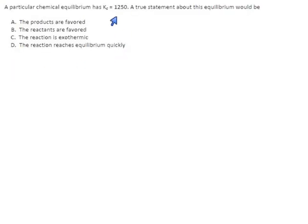A particular chemical equilibrium has an equilibrium constant of 1250, so all we take from this number is that it's much more than 1. And so we'd say this has a large K.